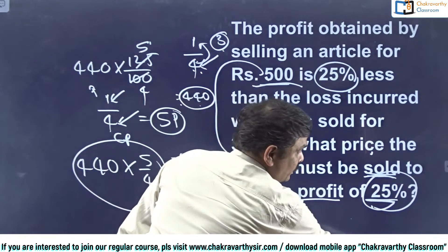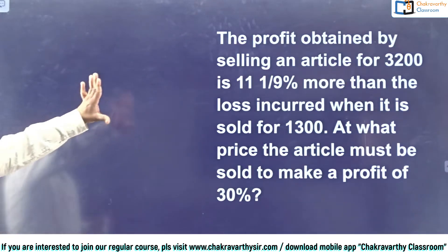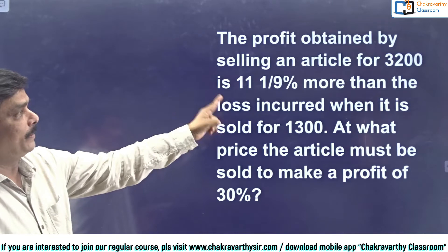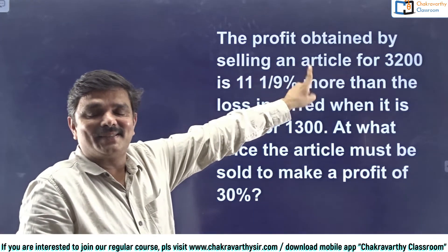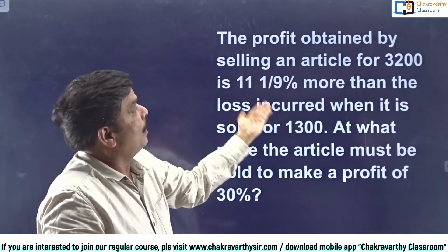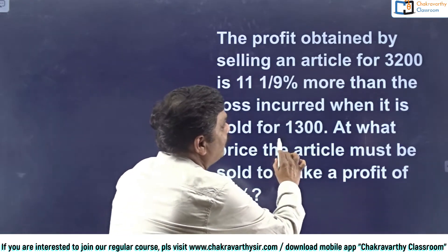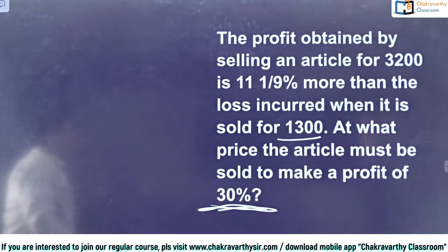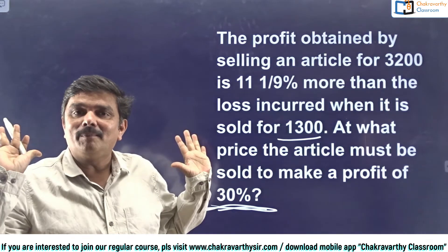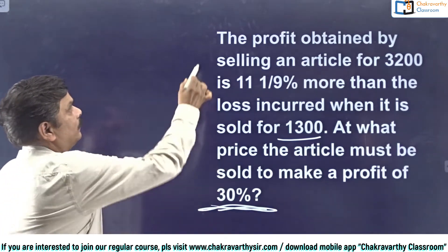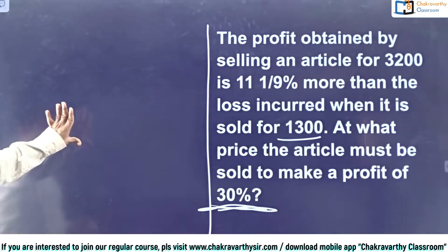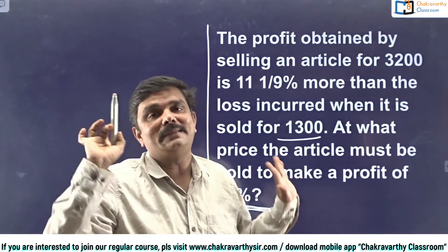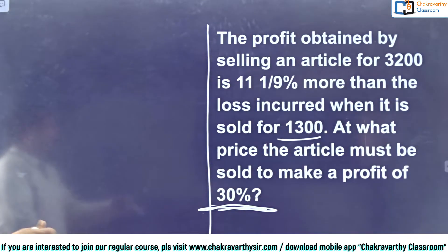Now go for the next question. The profit obtained by selling an article for 3200 is 11 1/9% more than the loss incurred when it is sold for 1300. At what price must the article be sold to make a profit of 30%? Just pause the video, set a timer for 30 seconds, do it, then resume to see my explanation.